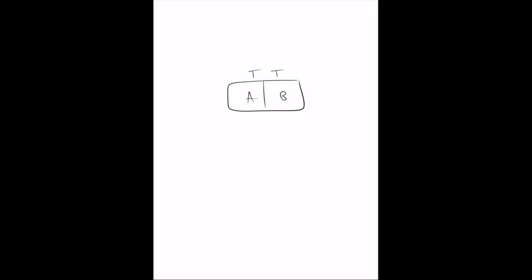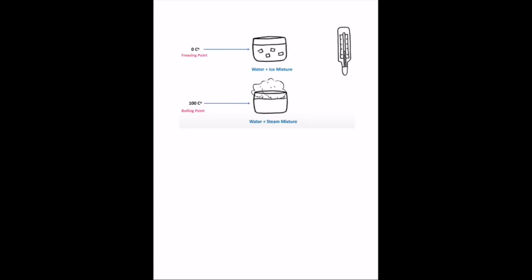There are different temperature scales such as Celsius, Fahrenheit, and Kelvin. In the Celsius scale, the freezing point is at zero degrees Celsius, corresponding to the temperature of a water-ice mixture at thermal equilibrium, and the boiling point is at 100 degrees Celsius, corresponding to the temperature of a water-steam mixture at thermal equilibrium.